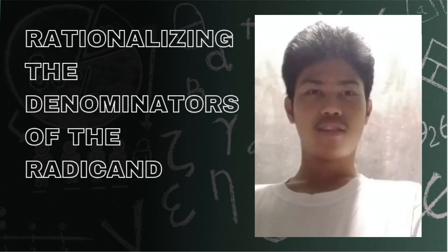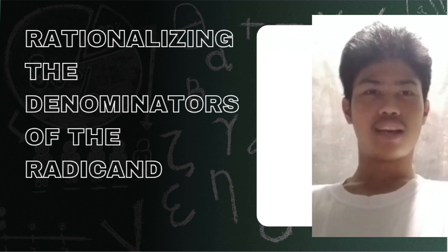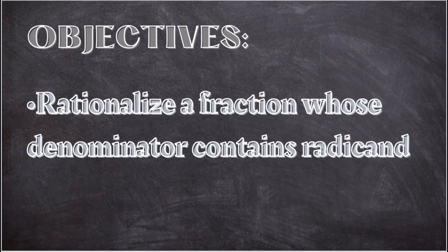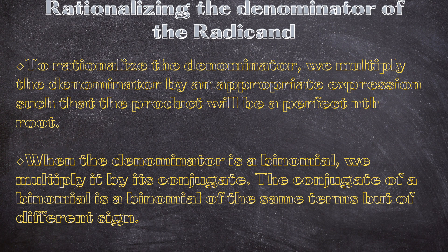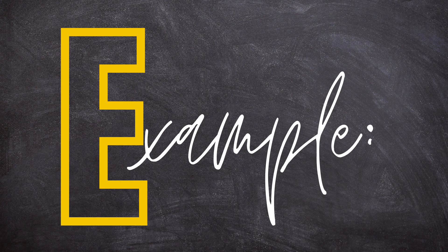Good day everyone. In this lesson we discuss rationalizing the denominators of radicals. Our objective is to rationalize a fraction whose denominator contains a radical. To rationalize the denominator, we multiply the denominator by an appropriate expression such that the product will be a perfect root. When the denominator is a binomial, we multiply it by its conjugate. The conjugate of a binomial is a binomial of the same terms but with a different sign.